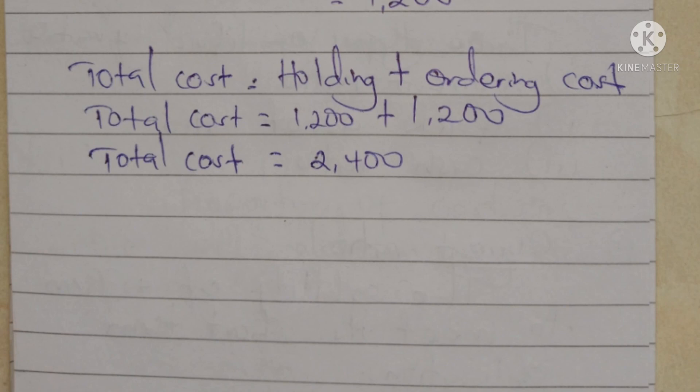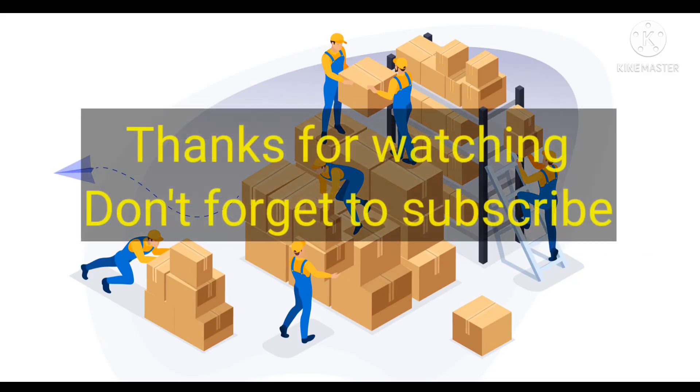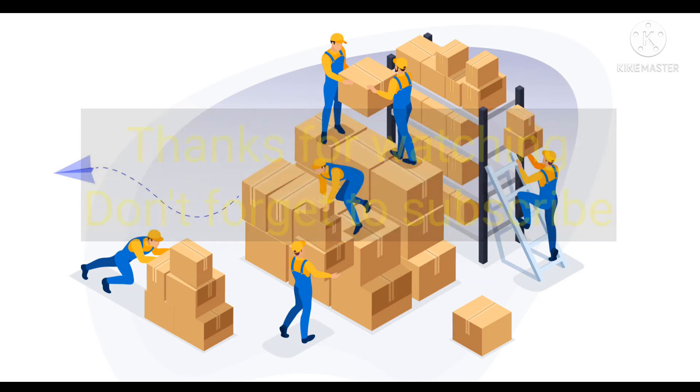Finally, the total cost is the sum of holding cost plus ordering cost. The ordering cost was 1,200 and the holding cost was also 1,200. Adding them together gives a total cost of managing the product of 2,400 shillings. That covers all the calculations in inventory management.